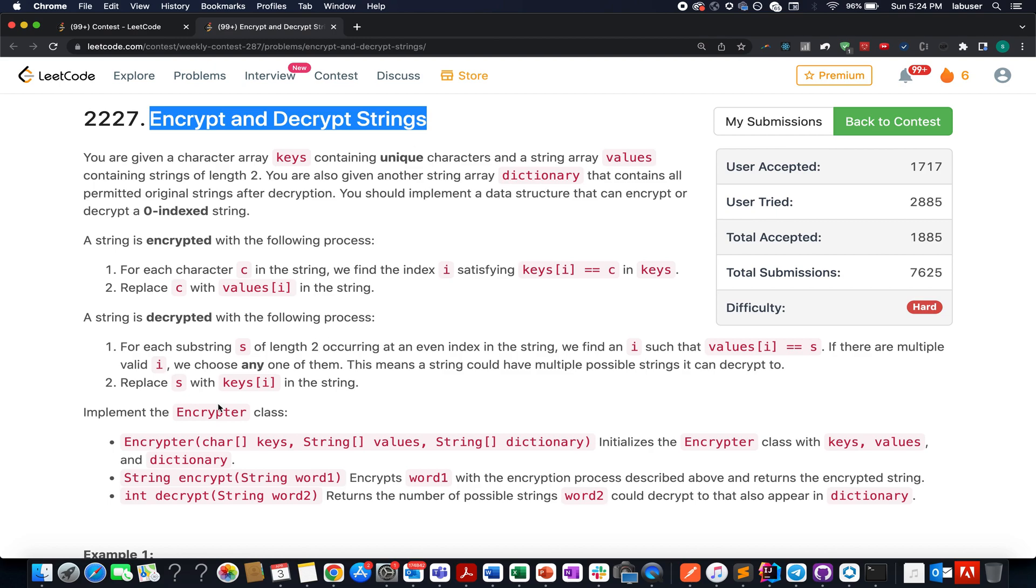In this problem we need to define three methods. The first one is the encryptor constructor which accepts three parameters: the keys, the values, and the dictionary. Keys and values are acting more as a map because the ith key maps to the ith value. So the first hint you should take from the question is to transform these key-value separated arrays into a map.